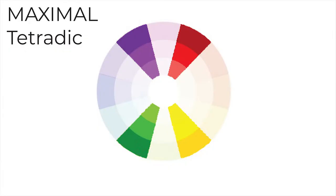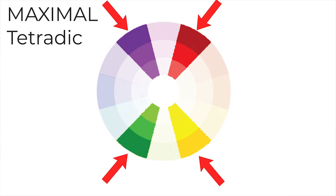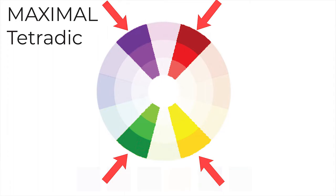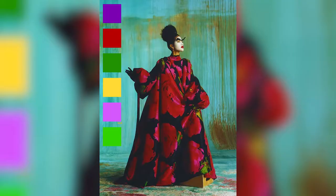Using the tetradic color scheme to choose your six colors based on the maximal style aesthetic — allowing you four colors to play with since this is a more-is-more style aesthetic. Picking purple, orange, yellow, and green from the color wheel with one primary and three secondary colors, you can tint or shade the four colors to get your additional colors for your six-color palette. These four colors make up the tetradic color scheme, forming a rectangle on the color wheel. Here is what it looks like.